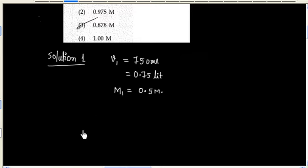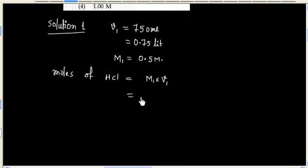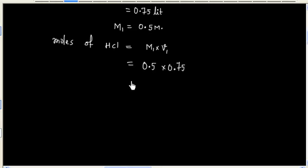We can calculate moles of HCl, that is molarity times volume. This value is 0.375 moles.